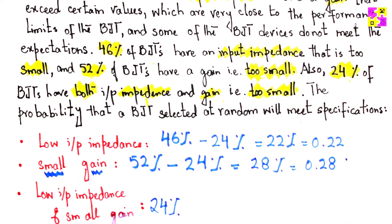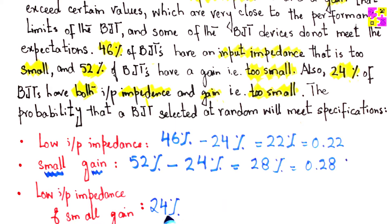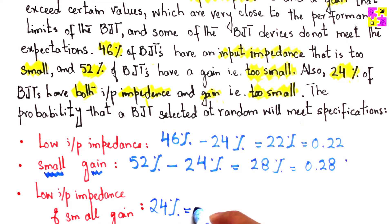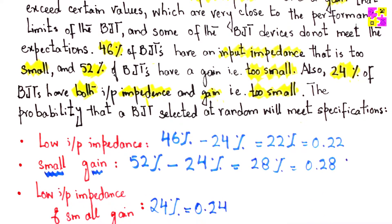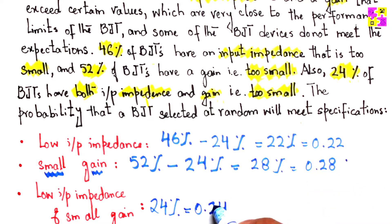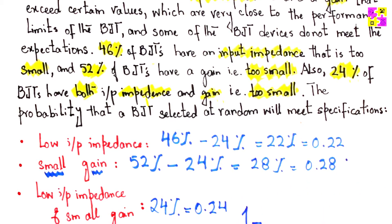All these three categories that you see: 22% have low input impedance, 28% have small gain, and 24%, which can also be written as 0.24, has both low impedance and small gain.